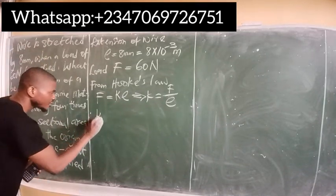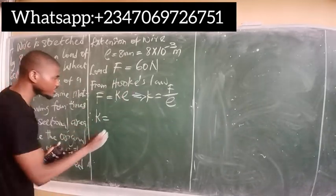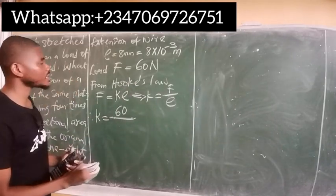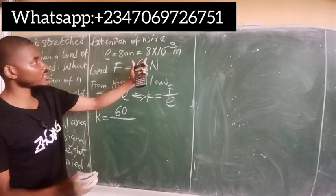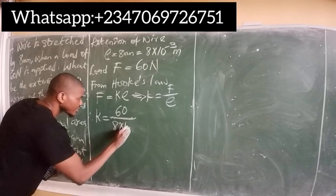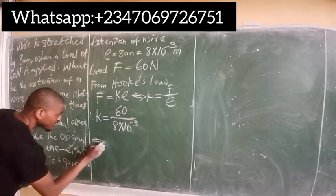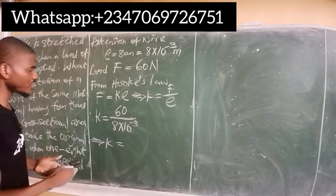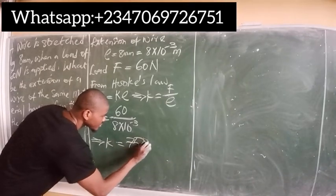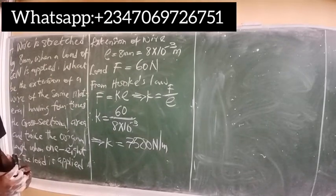Therefore, k equals the force — which is 60 newtons — divided by the extension, which is 8 times 10 to the power of minus 3 meters. This gives us a spring constant k equal to 7500 newtons per meter.